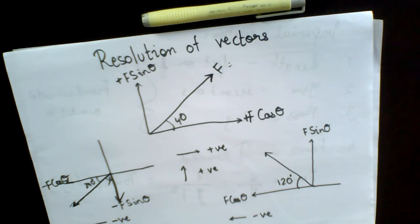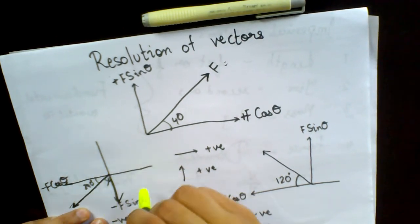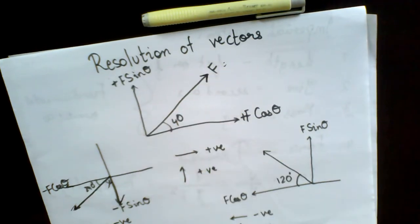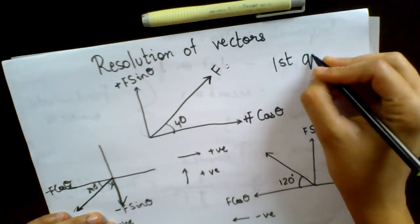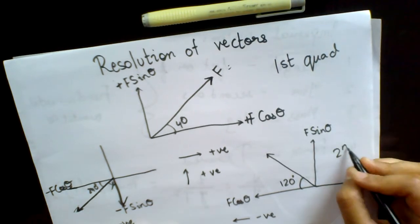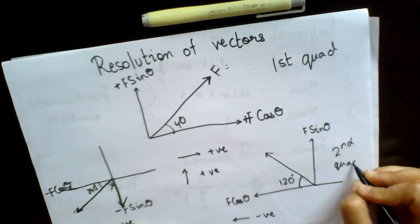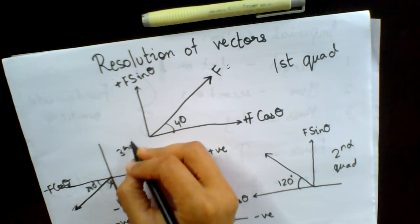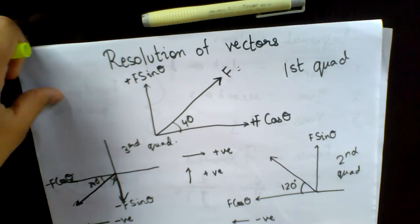Now I will be taking an example which covers the first, second, third, and fourth quadrants. Till now, in the first example I took the first quadrant, the next example was in the second quadrant, and the third example was in the third quadrant. Now I will be taking the fourth quadrant example.